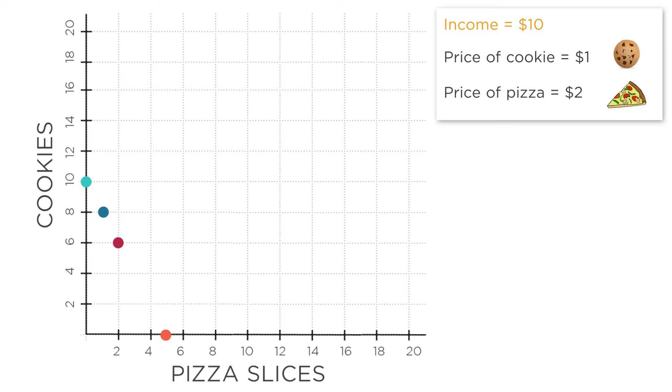Notice that these dots all fall in a diagonal line that goes from the top left to the bottom right. That's because if you want more pizza, you have to move to the right. But you're already spending all your money, so you have to give up some cookies. And so you'll have to move down.